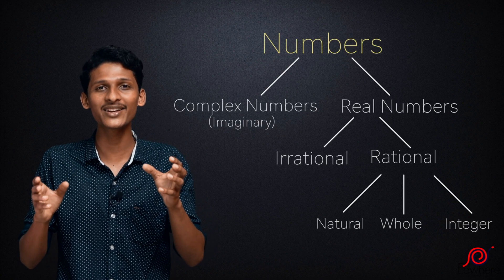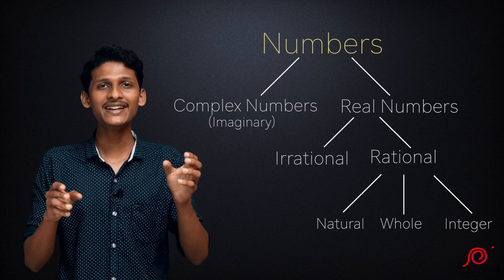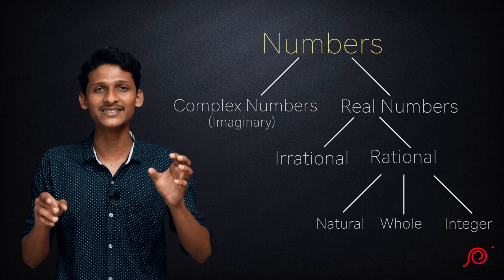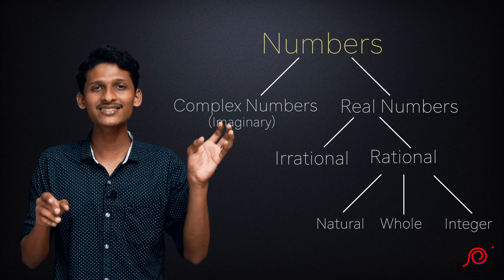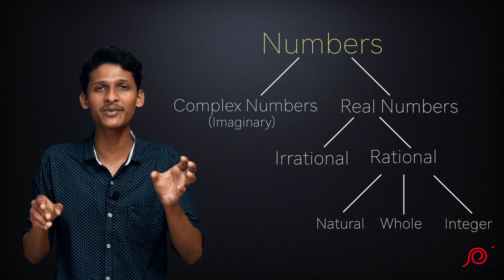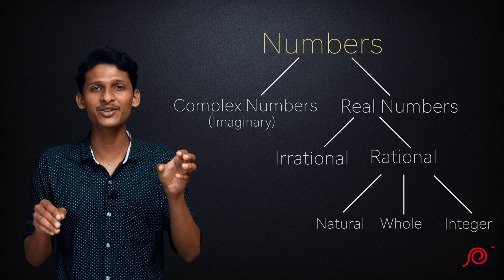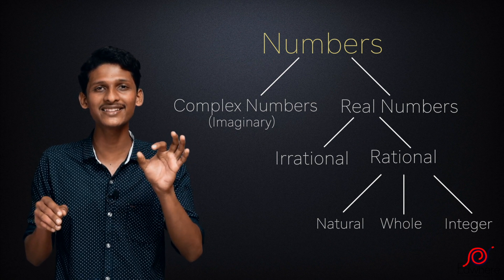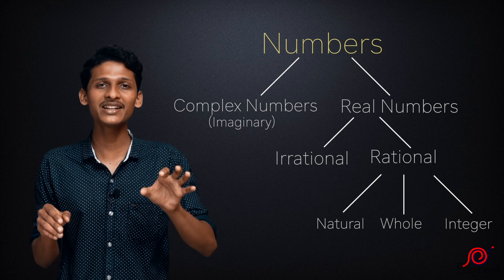Let's classify all numbers. The main group is numbers, which divides into real numbers and imaginary numbers. Real numbers include rational numbers, written in P by Q form, and irrational numbers. Under rational numbers, we have natural numbers, whole numbers, integers, fractions, and decimal numbers. This classification is very important, and you should study it well for higher studies. If you have any questions, please contact us via WhatsApp, and please share this video.